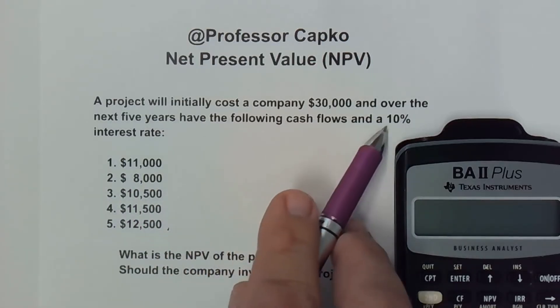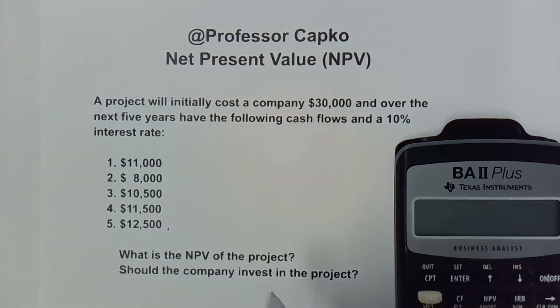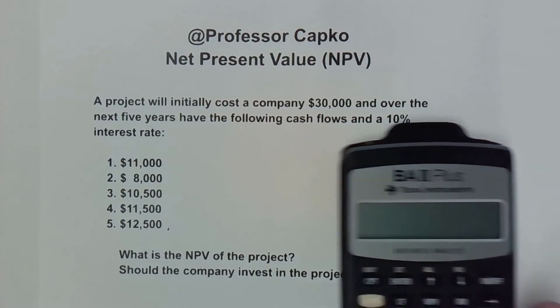And we are operating with an interest rate of 10%. So 10% is our interest rate. And given all this, we're going to calculate what the net present value of the project is and decide whether or not the company should invest in the project. So let's look at how we do this.